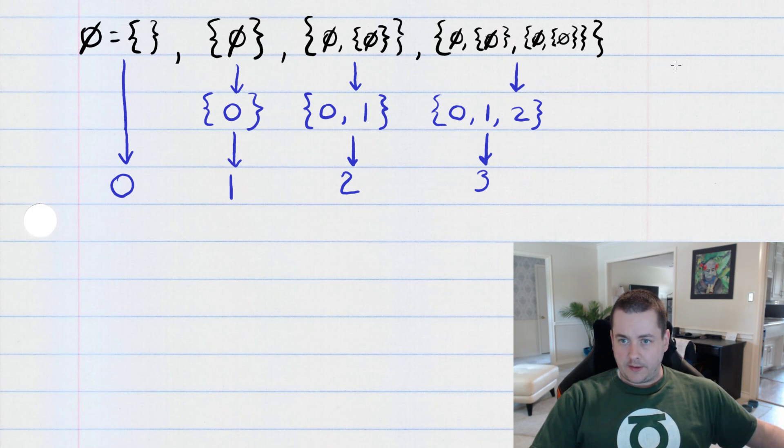So, I'm not even going to think about what the set theory notation would look like. It would be really ugly. But we're going to construct the set that contains the number zero, one, two, and three.